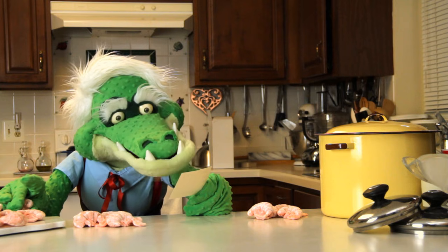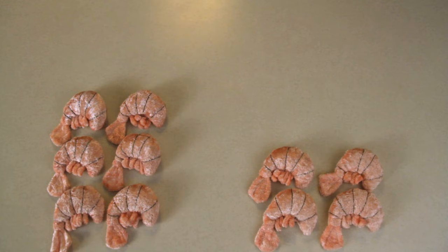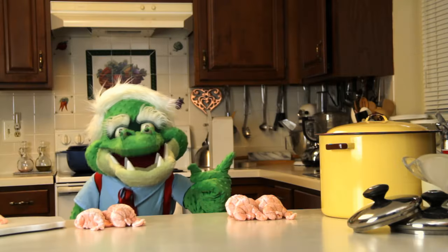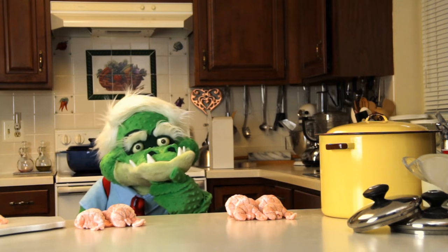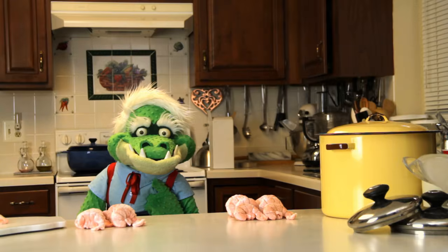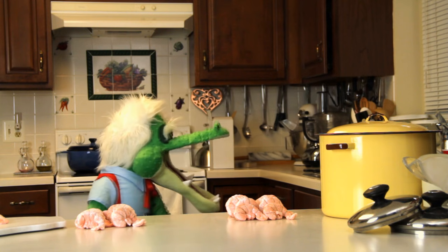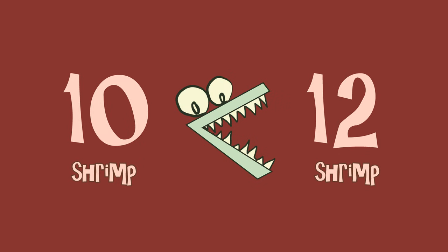Now we change the recipe here. This one called for ten shrimp, and this one called for twelve. Little tricky here. In the tens place, we have one — both the same. Then we check the ones place: zero and two. So we know twelve is the bigger number. We check the mouth — it's twelve.